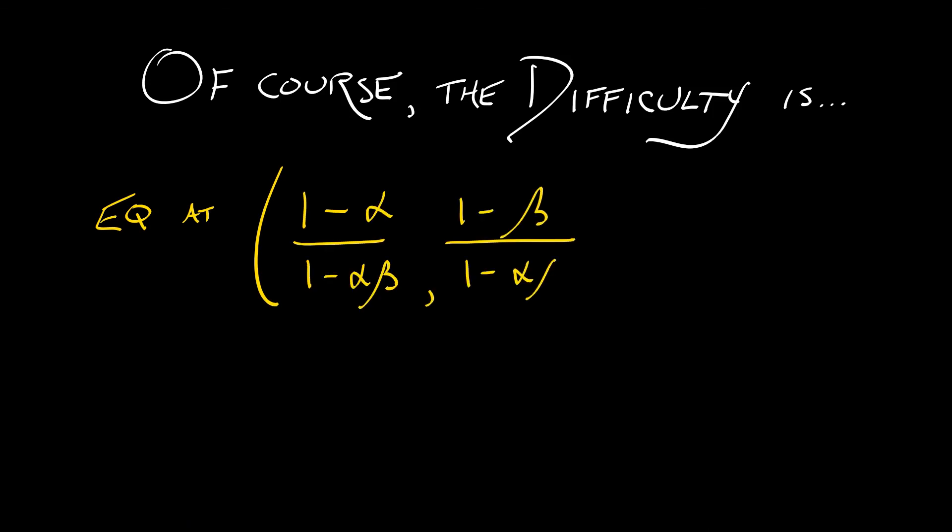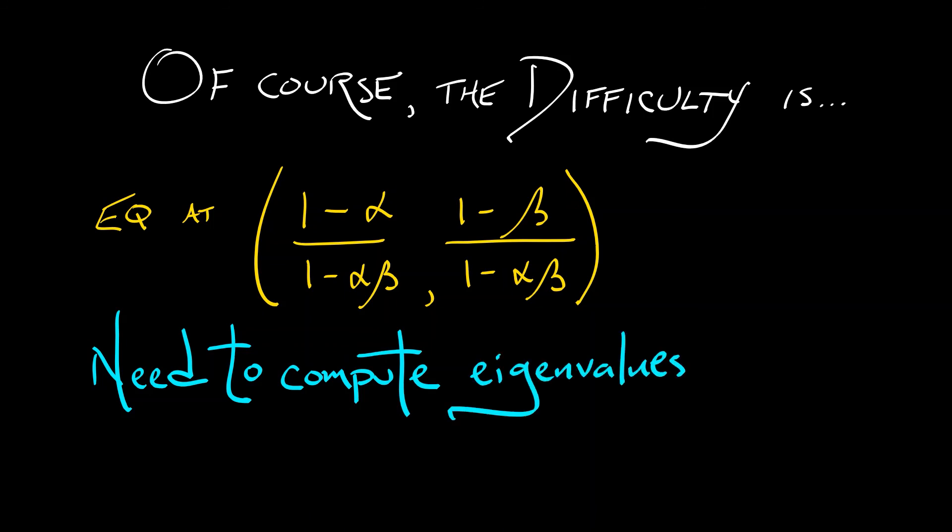Now, of course, that's not the real difficulty. The real difficult part of this discrete time model is analyzing the equilibrium at (1-alpha)/(1-alpha*beta) and (1-beta)/(1-alpha*beta), because there's no trace determinant stuff going on here. You're going to need to compute eigenvalues, and that is going to be painful. We're not going to touch that other than to say, when you're working in a discrete time system, you really have to do the work and compute the eigenvalues.